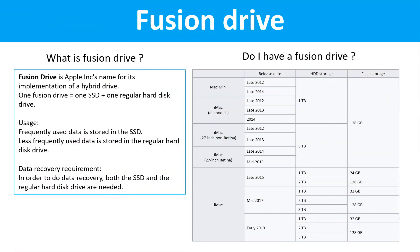Fusion drive. What is a fusion drive? A fusion drive is Apple Inc.'s name for its implementation of a hybrid drive. One fusion drive equals one SSD drive plus one regular hard drive. Frequently used data is stored in the SSD drive; less frequently used data is stored in the regular hard drive. For data recovery, both the SSD drive and the regular hard drive are needed. This table lists all the Macintosh computers which used fusion drives.